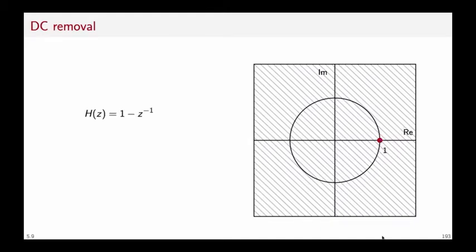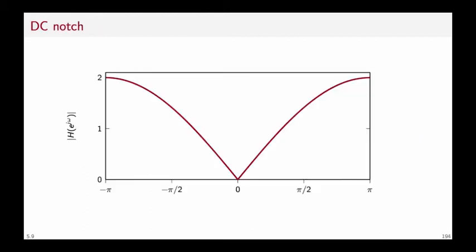The transfer function is very easy. It's one minus z to the minus one and the CCDE is equally easy. The output is computed as the difference of two subsequent samples, so x[n] minus x[n-1]. If we plot the frequency response this is the characteristic we obtain. Indeed the Fourier transform will be set to zero in zero. However this is definitely not an acceptable characteristic because it introduces a very big attenuation over almost the entirety of the frequency support.